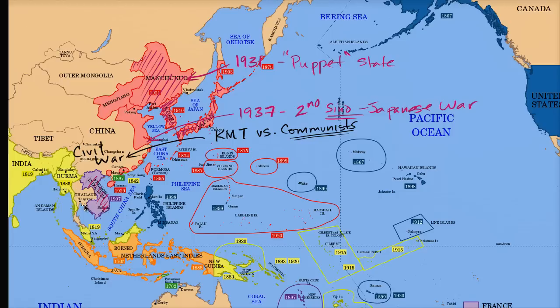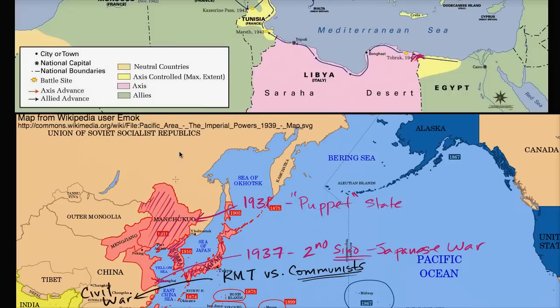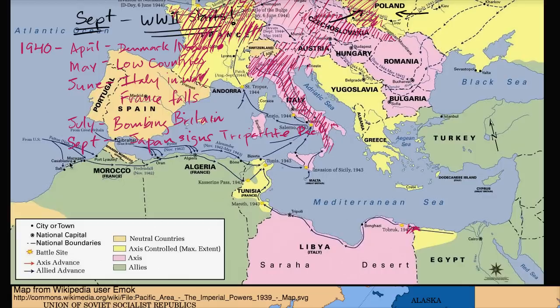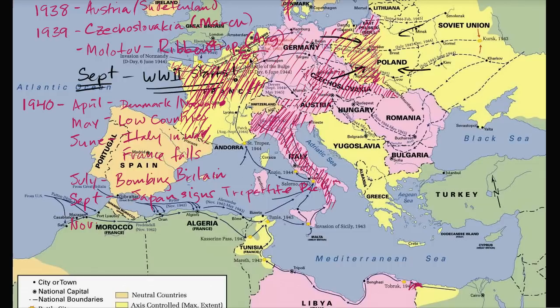Things are not really looking good at all, and it only gets worse from there. In November — we're a little over a year into the war now — Hungary and Romania are pressured to join the Axis. As we leave 1940, things are not looking good at all for the Allied powers.